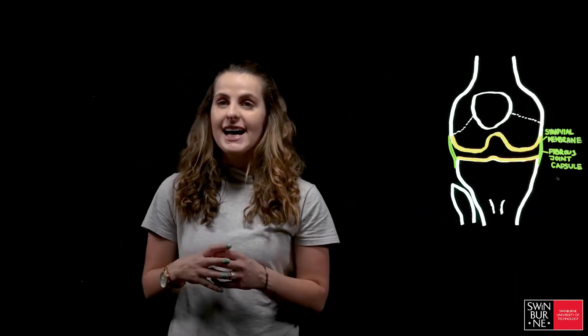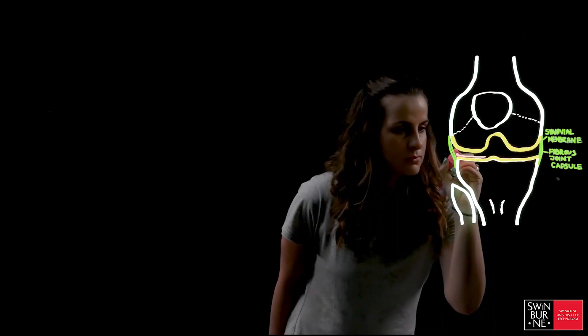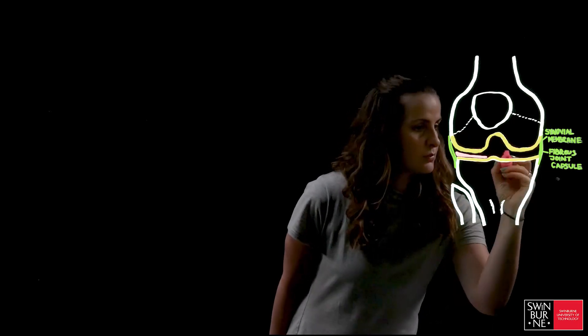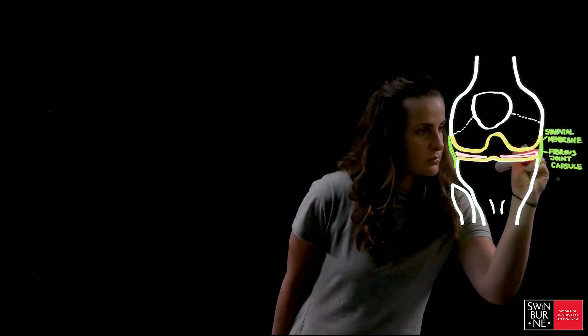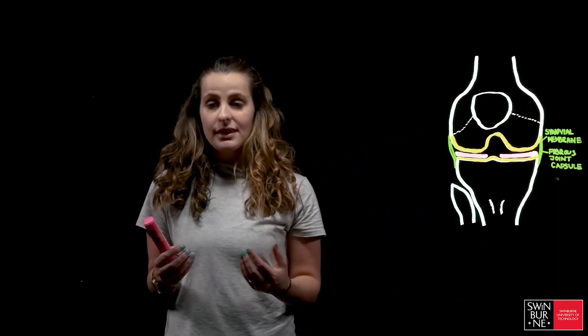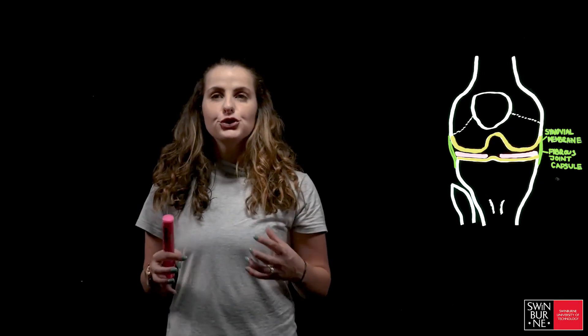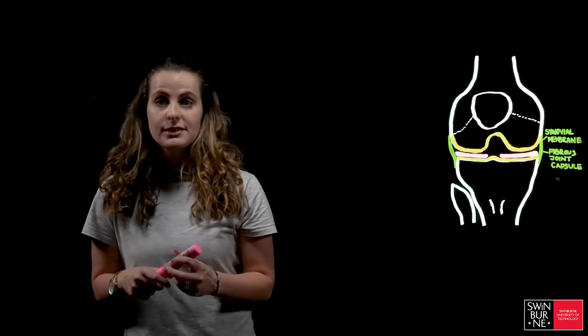We then have two fibrocartilage pads that are located superior to the tibial plateau that are called the menisci. There is a lateral and a medial meniscus within the space. We also have a transverse ligament that connects your medial and lateral menisci in order to anchor them down and secure them from moving too much within the joint space.